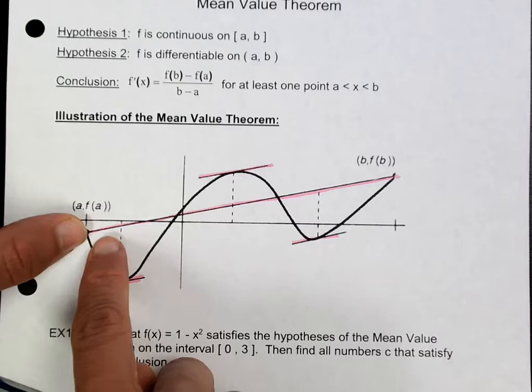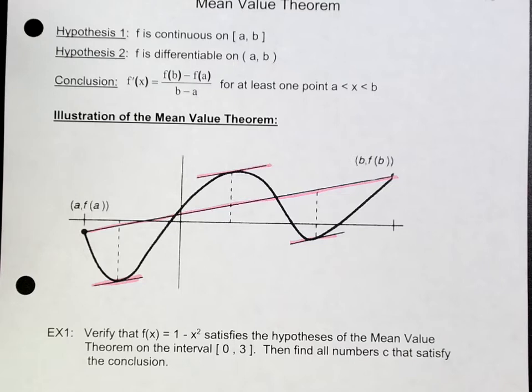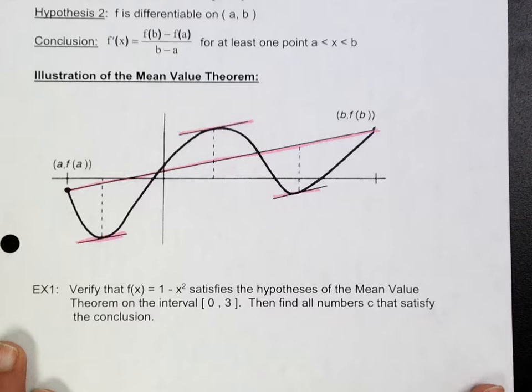where the slope of the secant line will be the same as the slope of the tangent line. That's what the Mean Value Theorem is essentially telling you.